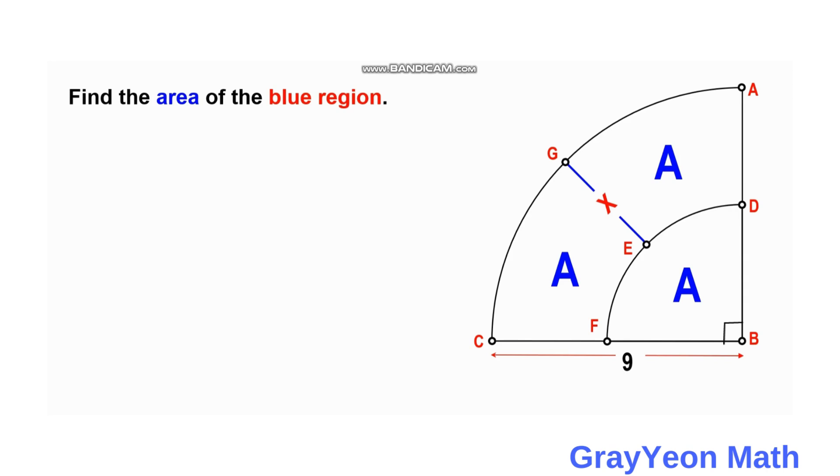First is we notice that this segment X divides the upper part or the 2 times A into 2 parts. Then if that is the case, then this arc DE should be congruent with this arc EF. And if you continue a line from segment GE, then this segment GE should inevitably pass to the center of the quarter circle.